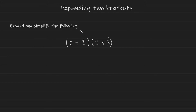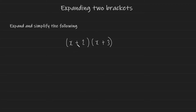Expand and simplify the following. We have x plus 2 in brackets multiplied by x plus 3 in brackets. How you would do this is very straightforward. Go to your first bracket, the bracket on the left, the x plus 2.